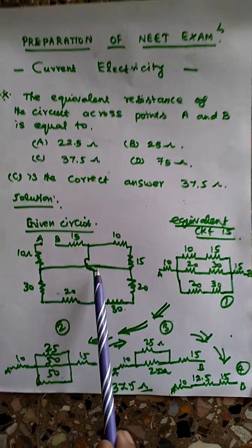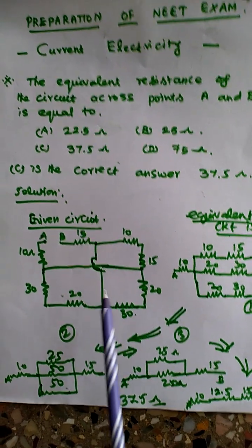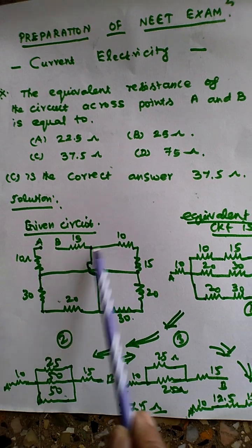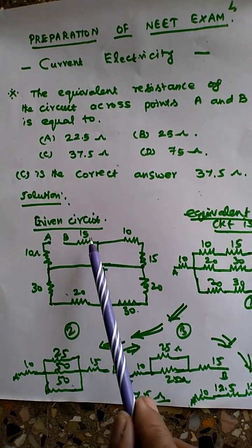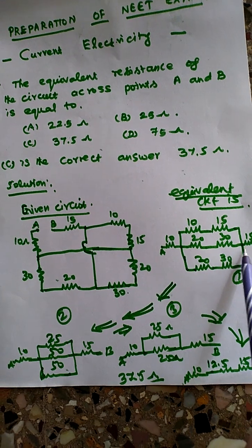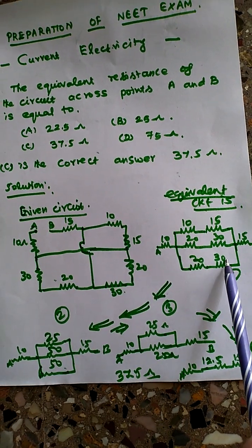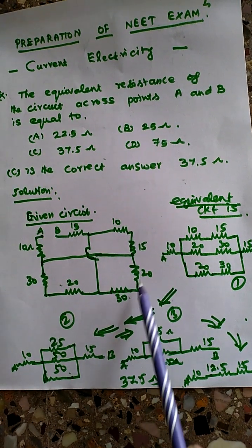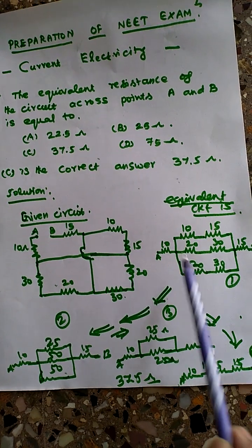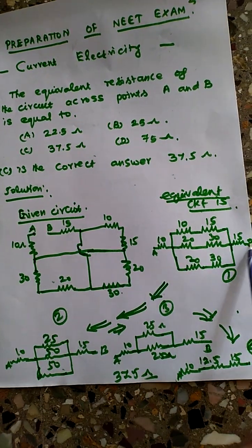From this circuit, we have to find the equivalent resistance step by step. In the equivalent circuit, 10 and 15 are connected in series, and the other 10 and 15 are also connected in series. Then 20 and 30, and on the other side 30 and 20 are connected. So we have groups: 10, 15, 20, and 30; and also 10, 15, and 30.